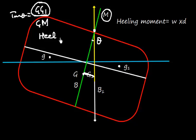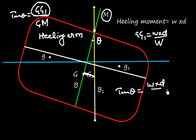Ships are allowed to have a certain amount of heeling moment. We can say that GG1 equals w times d divided by capital W. So I can write tan theta also equals w times d divided by W times GM, and this is nothing but heeling moment.